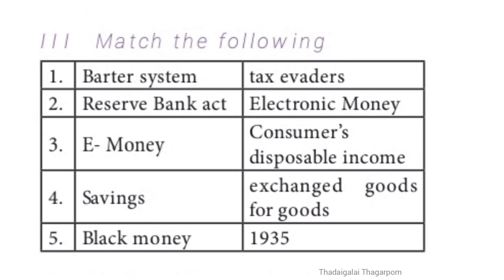Section 3: Match the following. 1. Barter system — Exchanged goods for goods. 2. Reserve Bank Act — 1935. 3. E-money — Electronic money. 4. Savings — Consumer's disposable income. 5. Black money — Tax evaders. The matching order is 5, 3, 4, 1, 2.